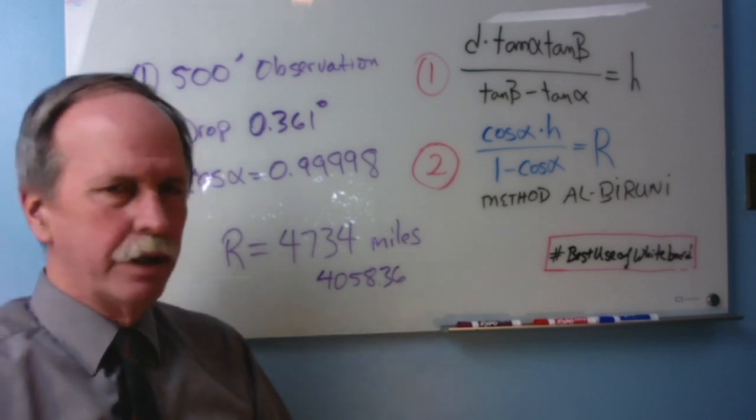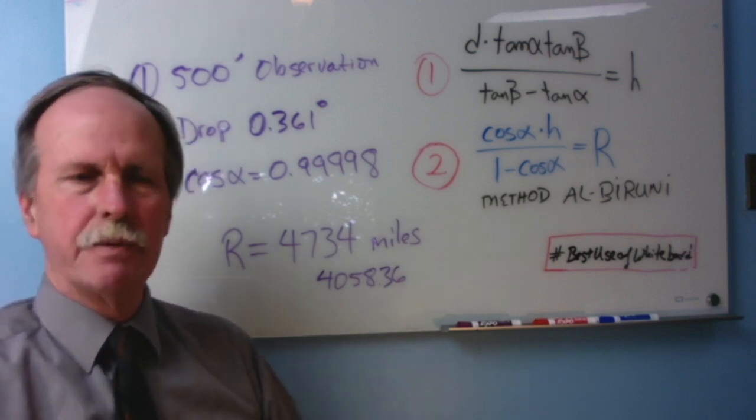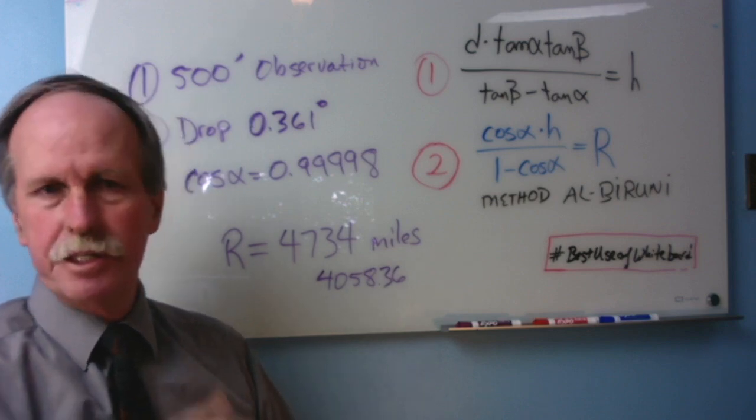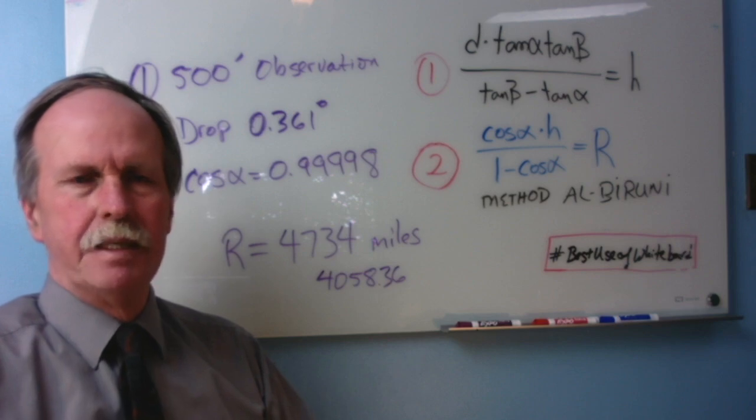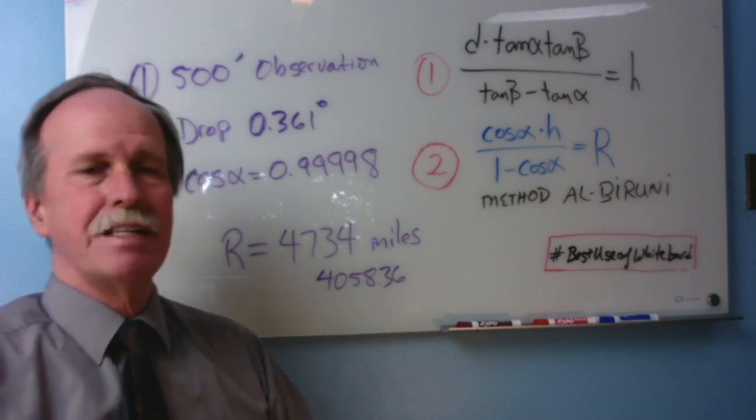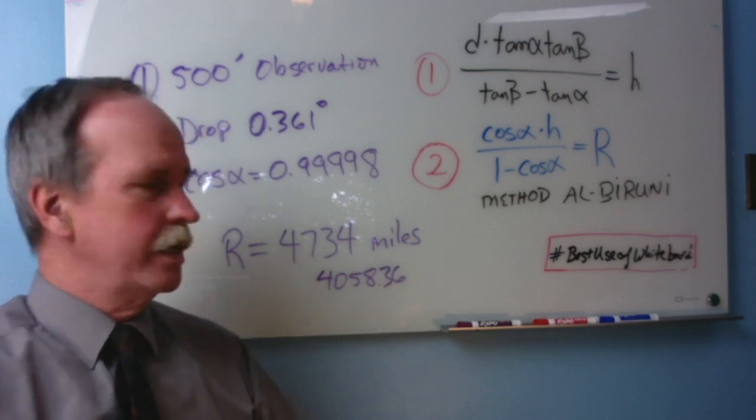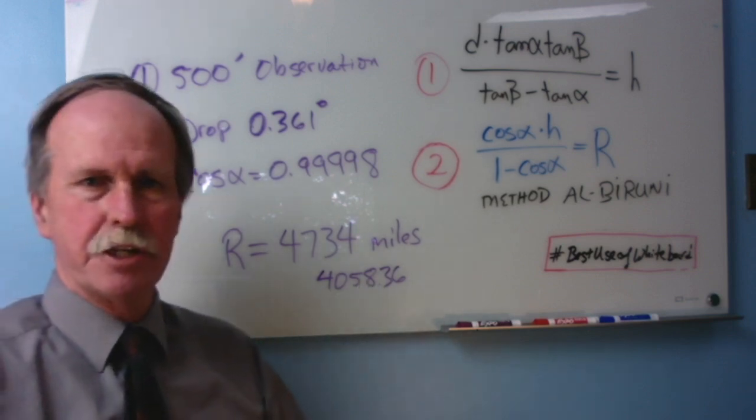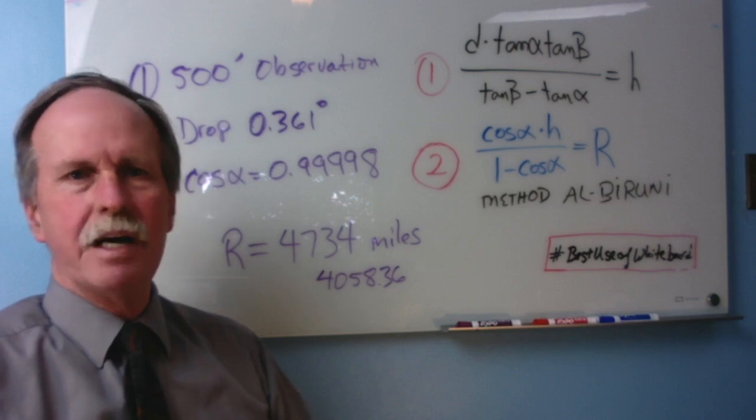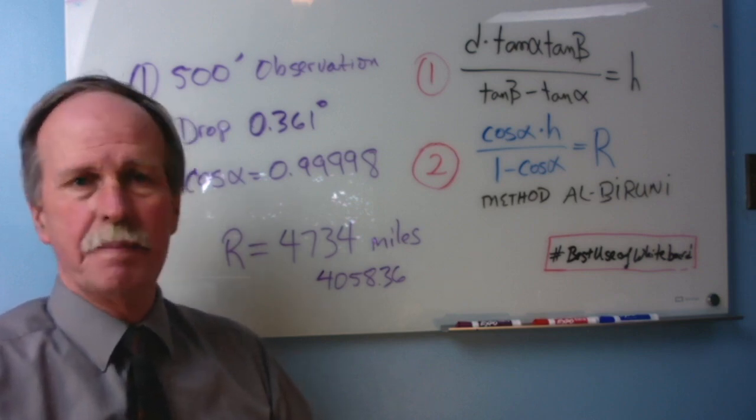As you recall, a standard adjustment for refraction, which is measured independently, is 7 over 6r. If you divide by 6 over 7, you end up with 4058 miles and some change. That's within 100 miles or so of the actual radius of the Earth. This isn't a bad method.